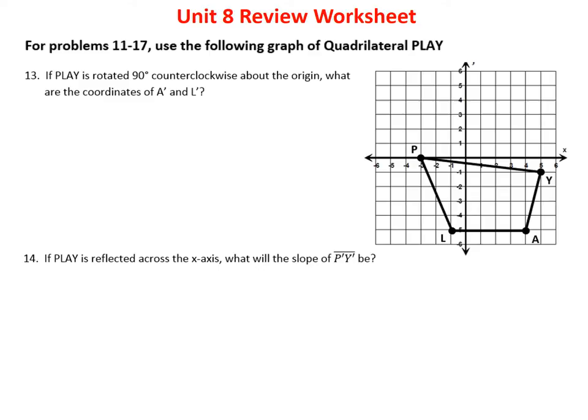Problem 13 says PLAY is rotated 90 degrees counterclockwise about the origin. What are the coordinates of A prime and L prime? I use the formula: (x, y) becomes (−y, x) — the coordinates switch places and the first becomes the opposite. For point A at (4, −5): switch to (−5, 4), then the opposite of −5 is positive 5, so A prime is (5, 4).